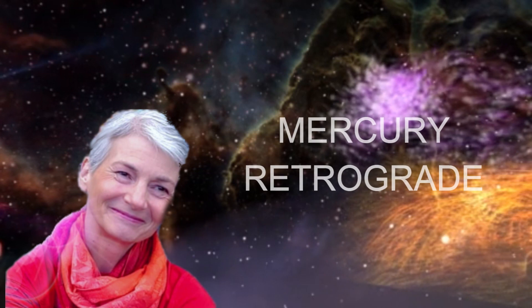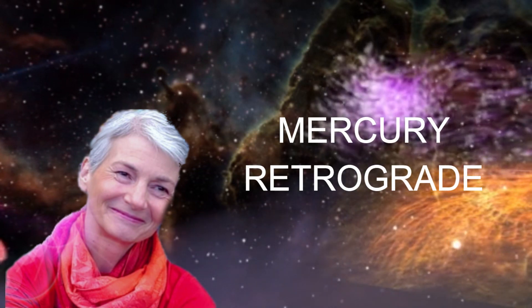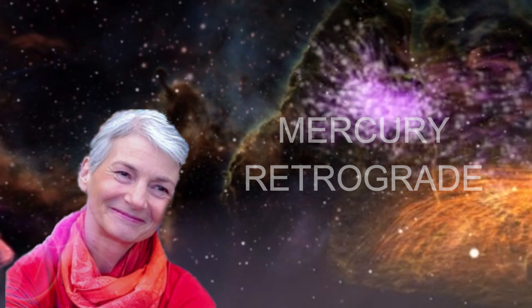Adding another complication to the mix of energies this eclipse season, Mercury stations retrograde on Monday, April 1st. This event is a very appropriate addition to April Fool's Day, since retrograde Mercury is often called the trickster.